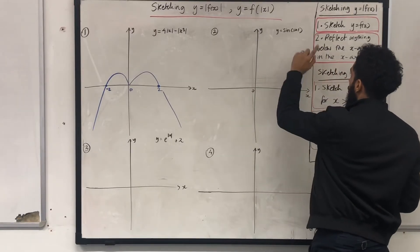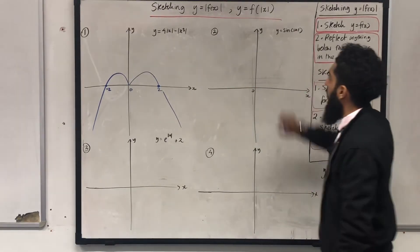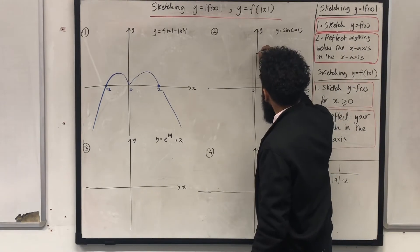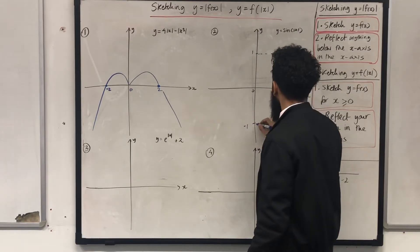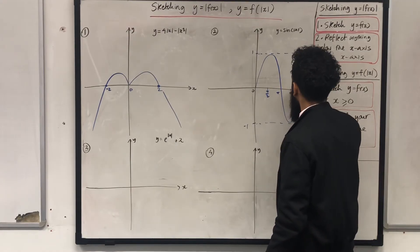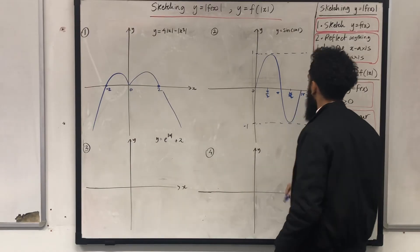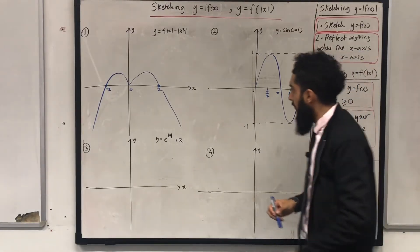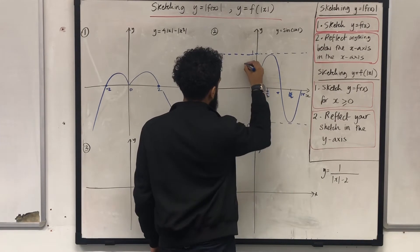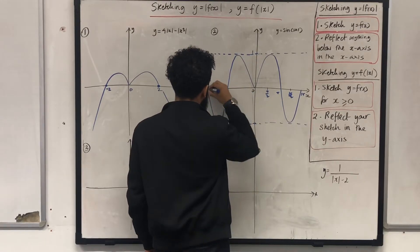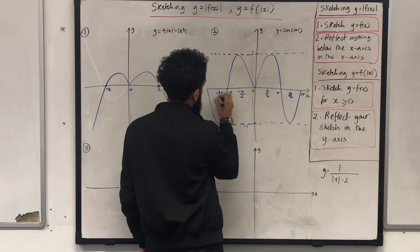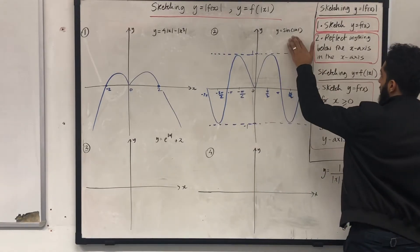Next: y equal sine of the modulus of x. I sketch this for x greater than or equal to 0, restricting the range from 0 to 2 pi. Key points: max 1, minimum minus 1, at pi over 2, pi, 3 pi over 2, and 2 pi. I then reflect the sketch in the y-axis to obtain the full graph. That is my sketch of y equal sine of the modulus of x.